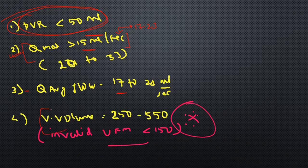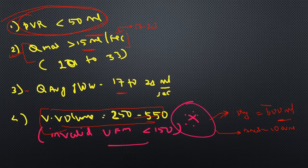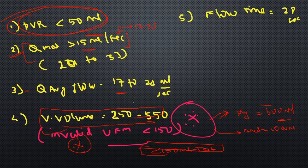The voided volume on average is 250 to 550 ml. The urinary bladder physiological volume is 600 ml — at this volume the patient will have maximum desire to micturate — and the anatomical volume is around one liter, above which the bladder may burst. For interpreting uroflowmetry reports, the patient should have passed at least 250 to 500 ml of urine. If less than 150 ml is passed, the test is invalid and cannot be interpreted.